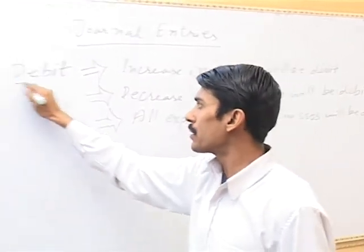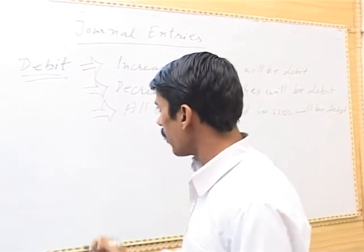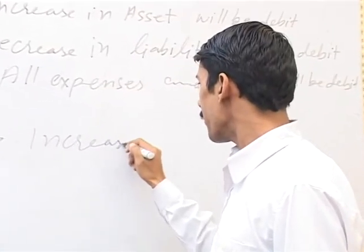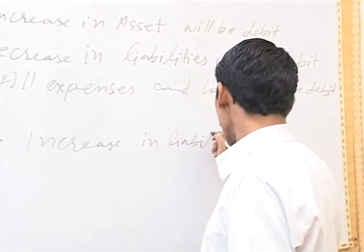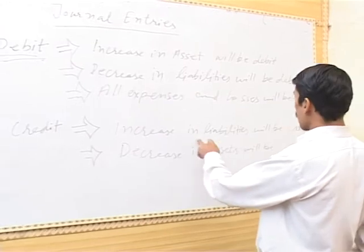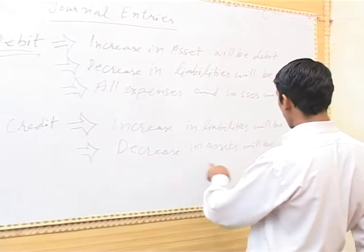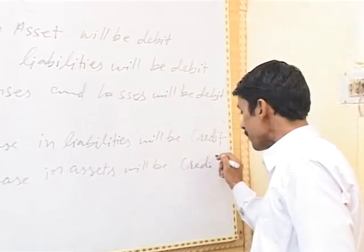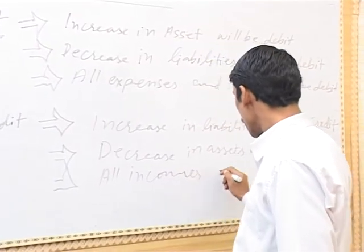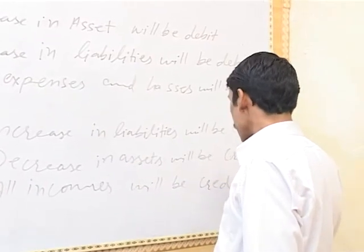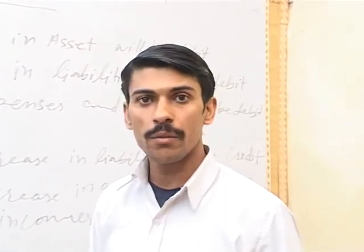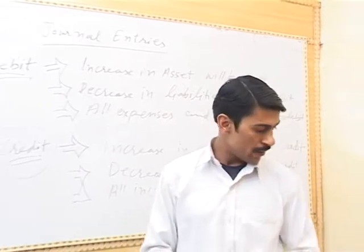So this is the first rule — what will be debit. Now what will be credit? Increase in liabilities will be credit. Decrease in assets will be credit. All incomes will be credit. So this is the credit rule.